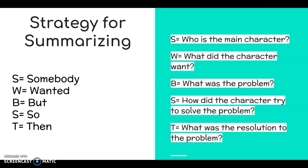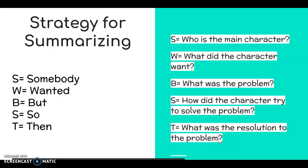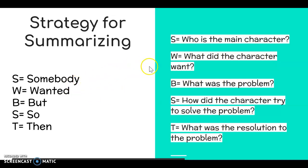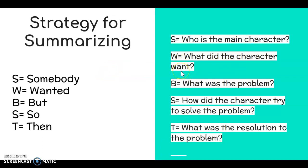The strategy we're using today is one we've all used — I know all of your teachers have taught you. It is: Somebody, Wanted, But, So, Then. Over here on the right-hand side, I wrote down some questions to think about at each step. For Somebody: who's the main character? For Wanted: what did the main character want? For But: what is the problem that happens — a lot of times this occurs in the middle of the story.